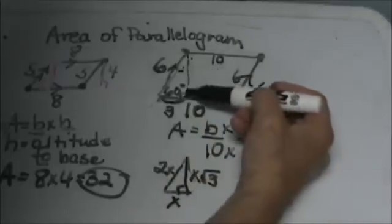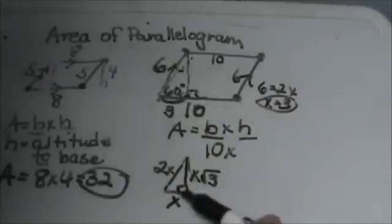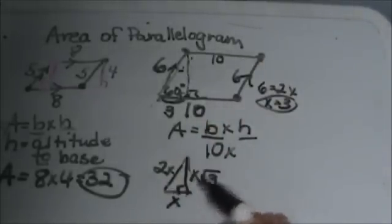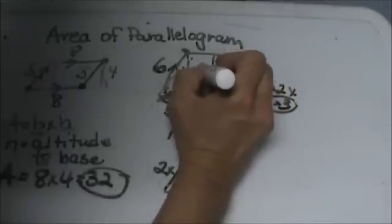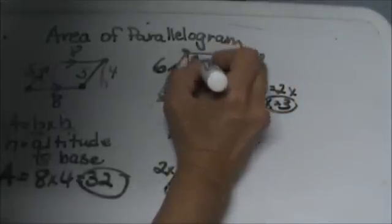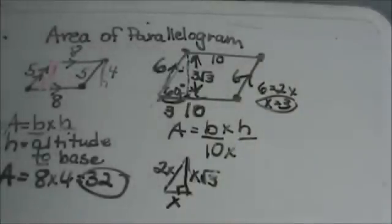And then I need to work to the altitude or the height. So I'm going to take that short leg times the square root of 3, 3 square root of 3. And that is actually the altitude inside that parallelogram.